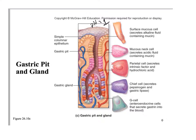The surface cells produce a thick mucus on the cell surface to protect them. There's also a little alkaline fluid to help neutralize the pH in the lumen. Moving deeper into the pit you encounter mucus neck cells, which secrete another acidic mucin. Then there are three very important cell types: parietal cells, chief cells, and G cells — also called enteroendocrine cells — which produce gastrin.